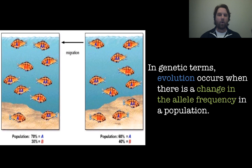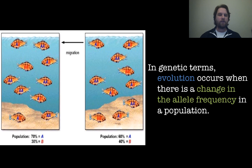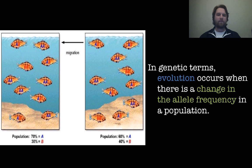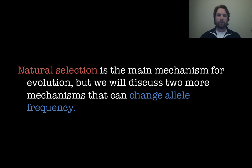In genetic terms, evolution occurs when there's a change in allele frequency in a population. The first population had a 70-30% split between allele A and allele B. Over time, something happened and the population's allele frequency changed to 60-40. That is evolution.